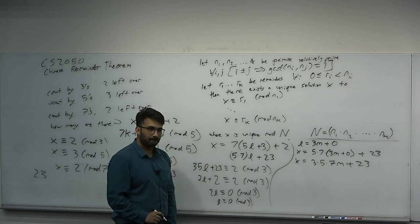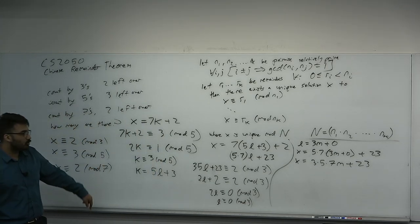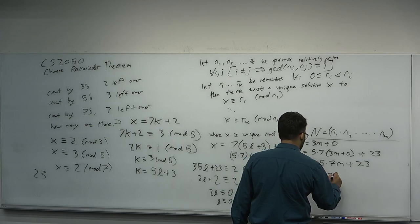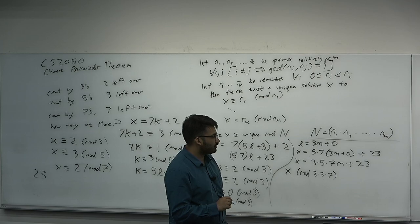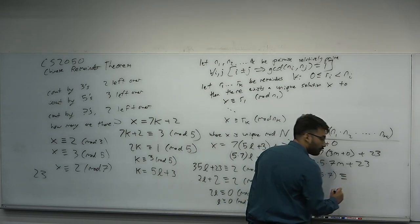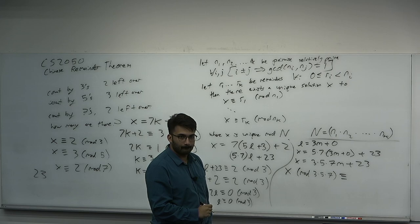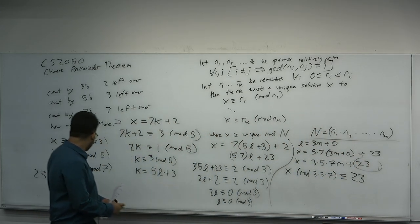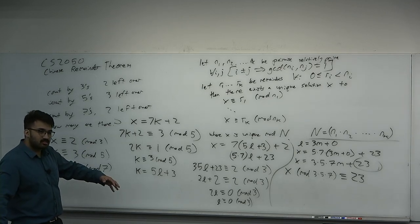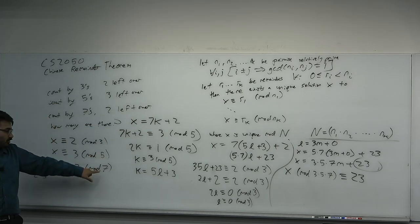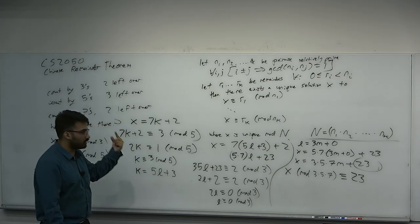Plugging L = 3M back into x: x = 35(3M) + 23 = 3 times 5 times 7 times M + 23. When you mod x by 3 times 5 times 7, which is 105, the first term vanishes and you're left with 23. So x ≡ 23 mod 105. That's the answer. You go biggest modulus to smallest because 7 mod 5 gets smaller but 5 mod 7 may not. Start from the biggest to reduce cleanly.